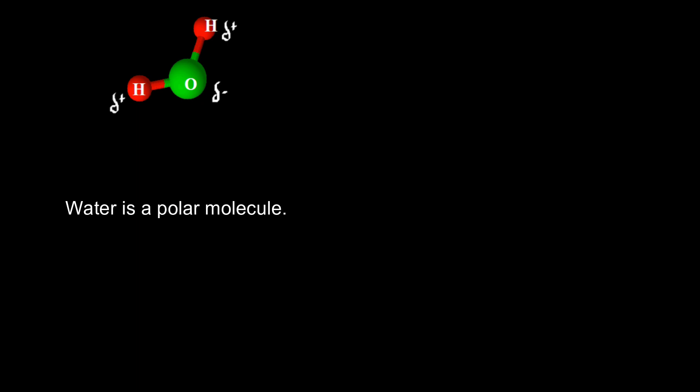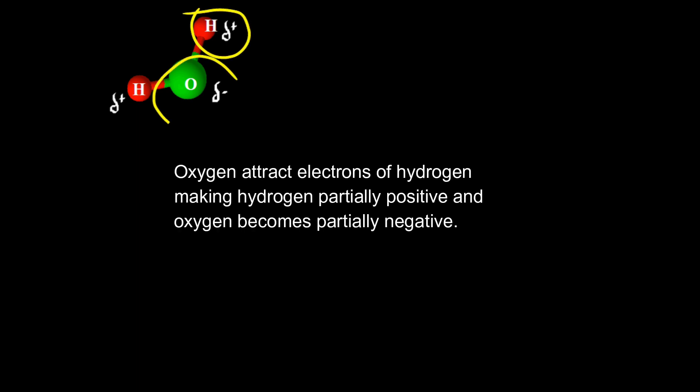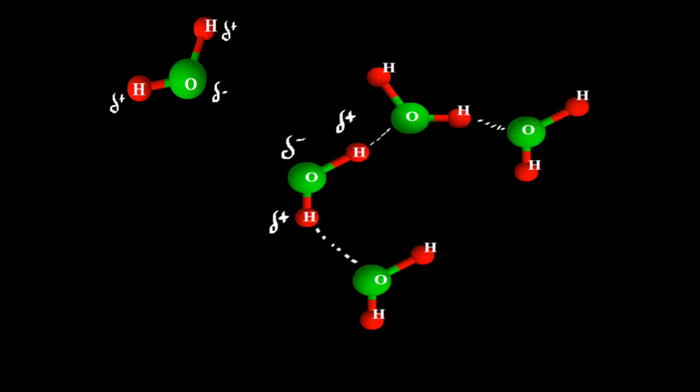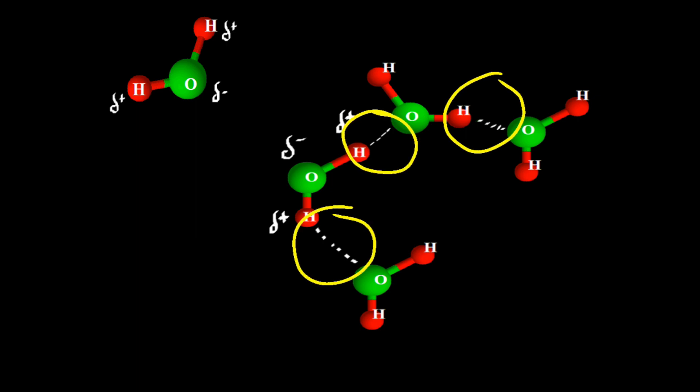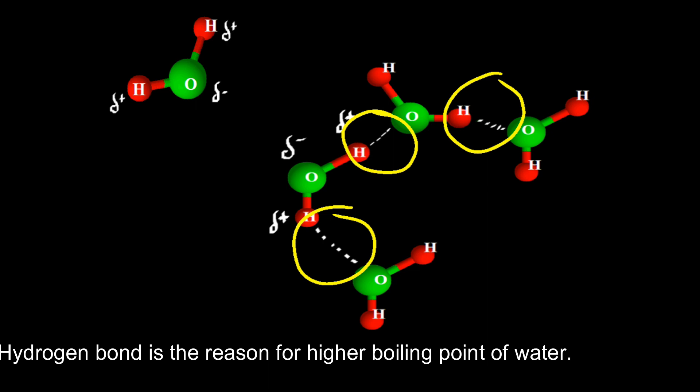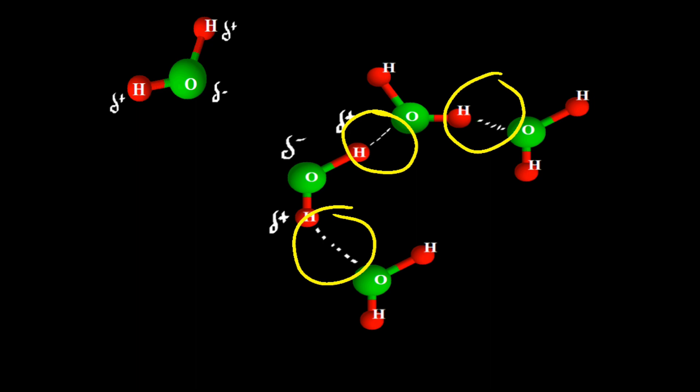Here we are going to see another example — water. Water is also a polar molecule because the hydrogen of water is partially positive charged, since oxygen attracts the electrons of hydrogen, causing a partial positive charge on hydrogen and a partial negative charge on oxygen. When water molecules exist together, they are interacted by the hydrogen bond. This hydrogen bond is the reason for the higher boiling point of water, because more energy is required to break it.